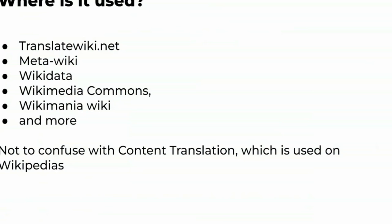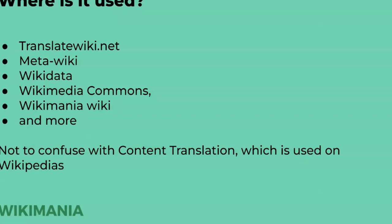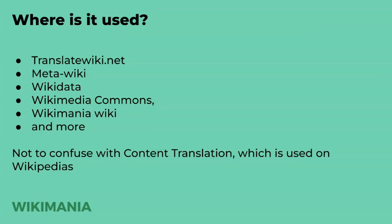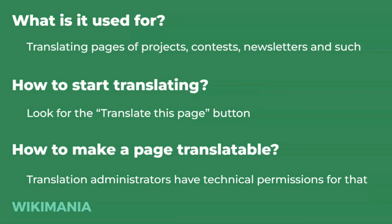Where is it used? It is used on multiple wikis — on Translatewiki.net, where we can translate the interface of our wikis, but also on Metawiki, Wikidata, Wikimedia Commons, and more. Please don't confuse it with content translation, because this extension is not used on Wikipedia the way content translation is. What we usually translate through the Translate extension is translating projects, contest pages, newsletters of different teams and affiliates, and also templates intended for usage on such projects.